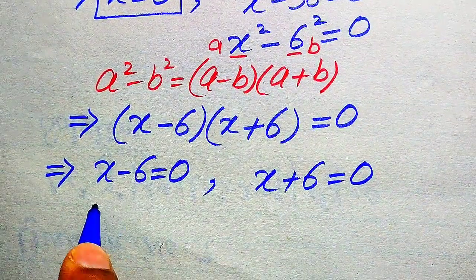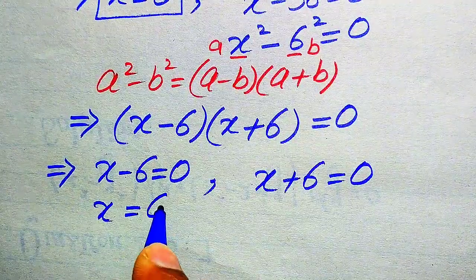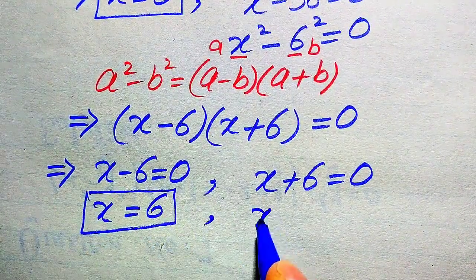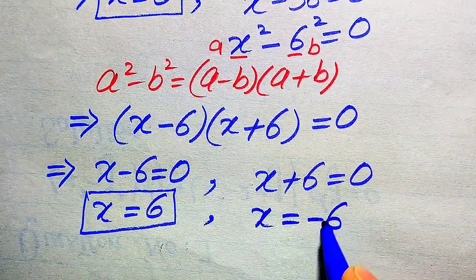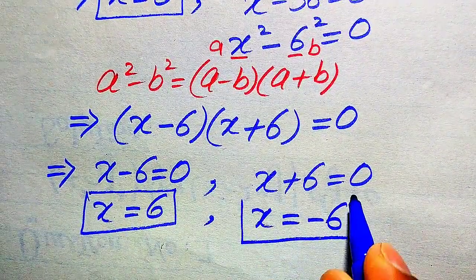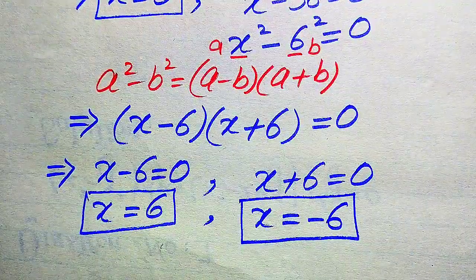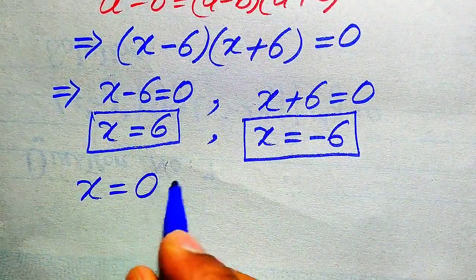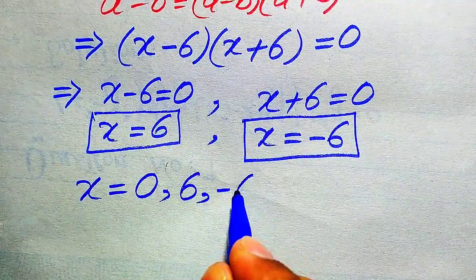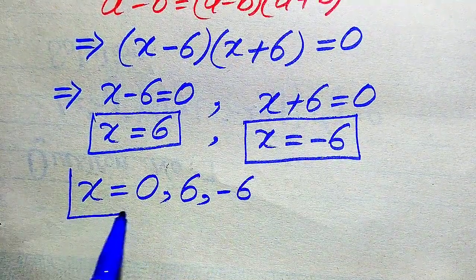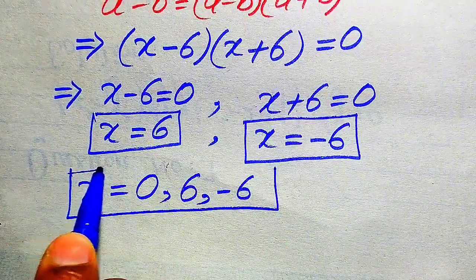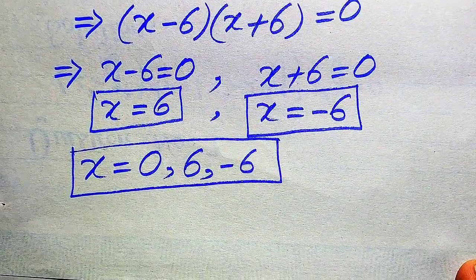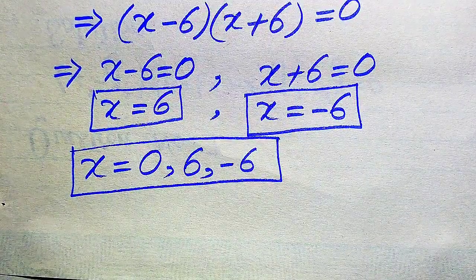From x minus 6 equals zero we get x equals 6, the second root. From x plus 6 equals zero we get x equals minus 6, the third root. So the three roots of the given equation are 0, plus 6, and minus 6.